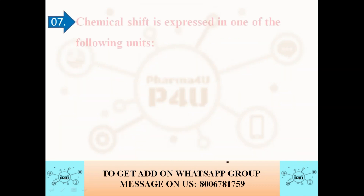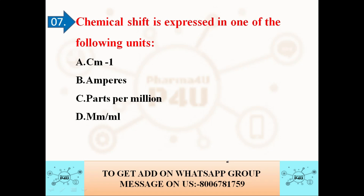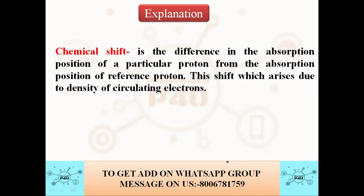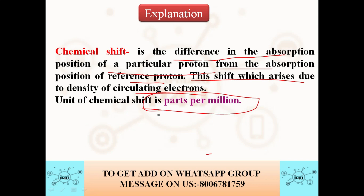The next question is: chemical shift is expressed in which of the following units — option A: centimeter inverse; option B: amperes; option C: parts per million; option D: mm per ml. The correct answer is parts per million (ppm). Chemical shift is the difference in the absorption position of a particular proton from the absorption position of a reference proton. This shift arises due to the density of circulating electrons, and its unit is parts per million.